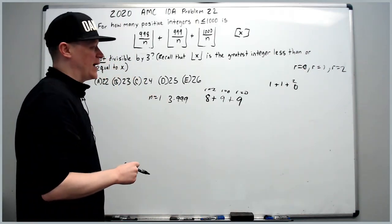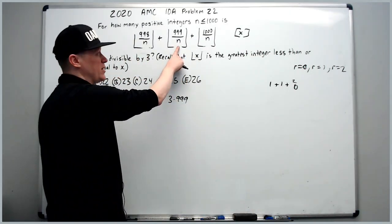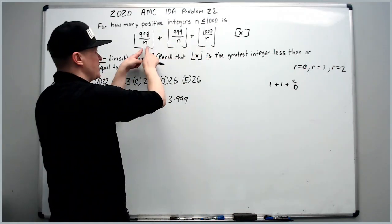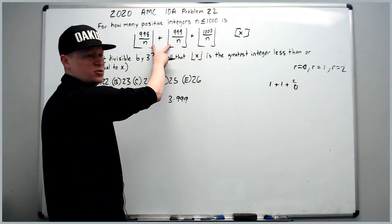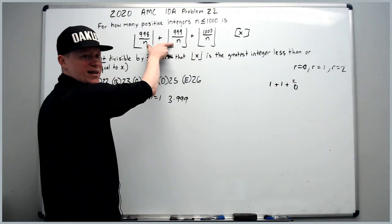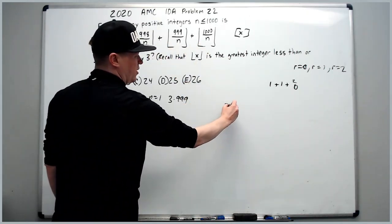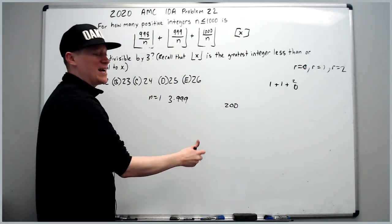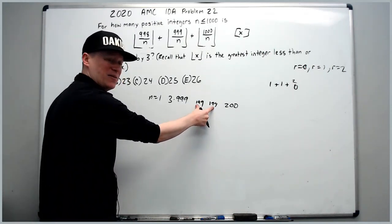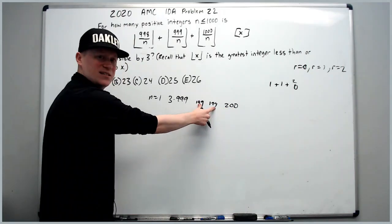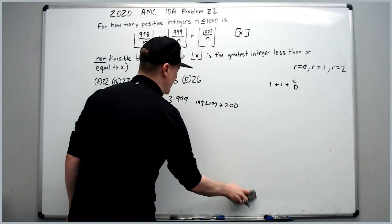Similarly, if n divides 1000 but not 998 or 999, then ⌊998/n⌋ and ⌊999/n⌋ both fall back to the last multiple, giving two values with the same remainder and one different — again not divisible by 3. So we need: how many divisors does 999 have, and how many does 1000 have?